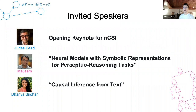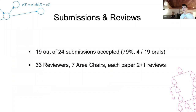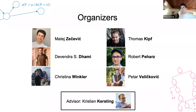Our talks: Judea Pearl gave the open keynote; then we had someone from IIT Delhi talking about neural models with symbolic representations; Dania Shrita from MILA talking about causal inference from text; Jovana Mitrovic from DeepMind on representation learning and causality; Toby Gerstenberg from Stanford — a cognitive scientist — on causal judgment; and a talk from UCLA asking whether AI can learn to reason. We had 24 submissions, 19 papers, plenty of reviewers and area chairs.